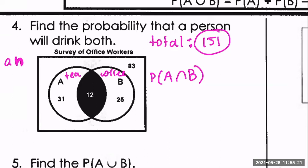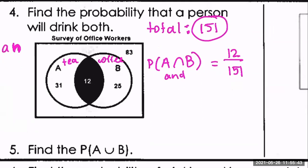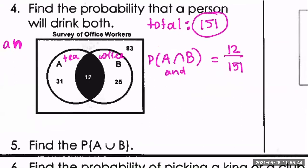The total number of people surveyed is 151. For classwork today, note that the total is the sum of everyone, including all people on the outside. Now let's answer question four first: find the probability that a person will drink both tea and coffee. The symbol for 'both' is the intersection symbol — an upside-down U — representing A and B, or A ∩ B.